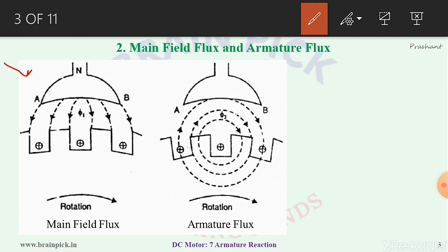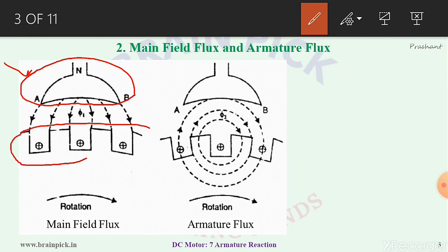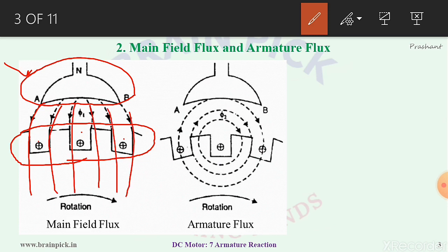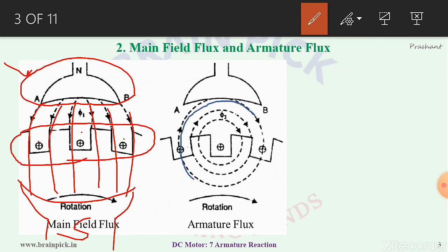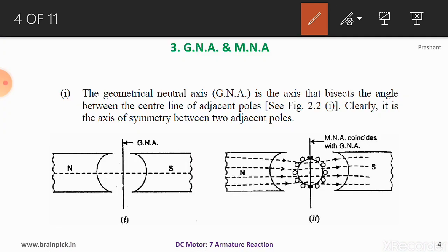Now take a close look at main field flux and armature flux. In the first diagram, we have a field pole — that is north pole — and a part of the armature where conductors are placed in the slots. Fluxes start from north pole and end at south pole. This flux produced by the main pole is called main field flux. In the second diagram, armature flux: when armature conductors carry electric current, the resultant flux is shown by circular dotted lines — this is called armature flux.